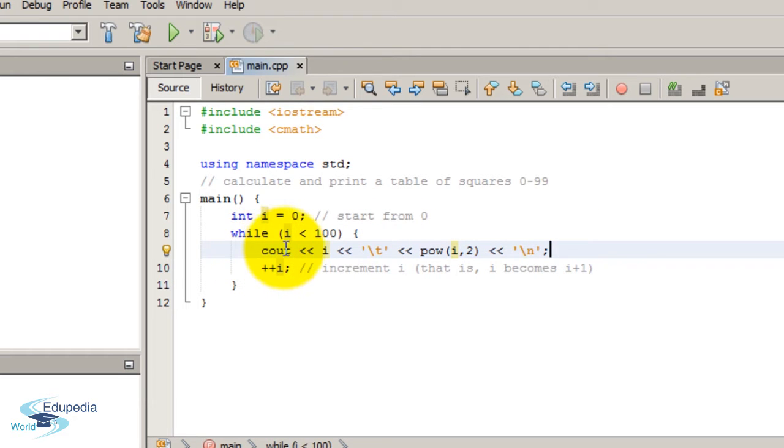Inside the code block it has a cout statement. In this cout statement it will print out the value of i. This backslash t means the tab space. And this is the power function from the cmath library. To use this function you need to include the cmath library.